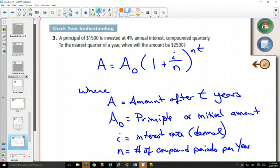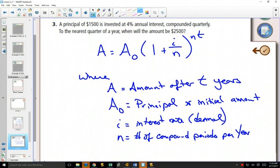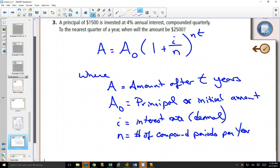In our question: principal of $1500, invested at 4% annual interest... principal of... yeah, beautiful writing here I know... A principal of $1500 is invested at 4% annual interest compounded quarterly. To the nearest quarter of a year, when will the amount be $2500?